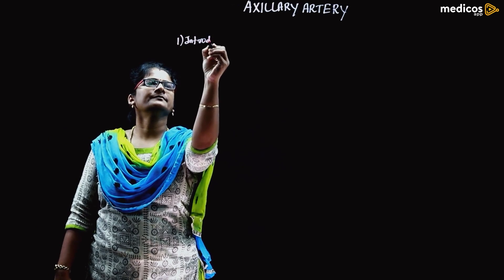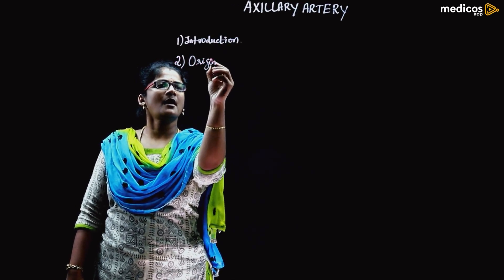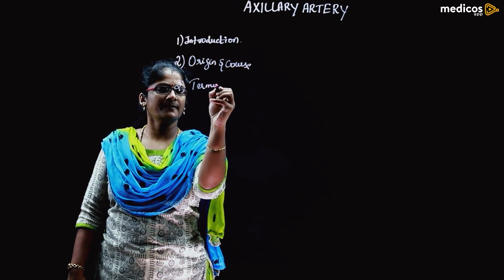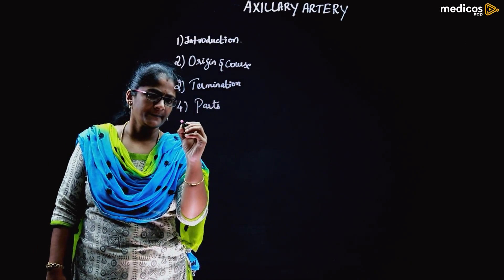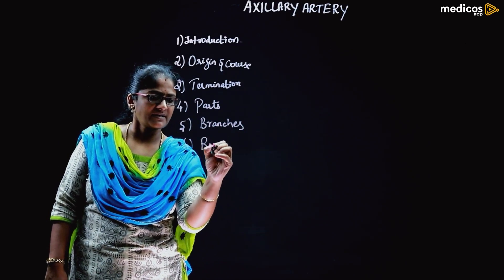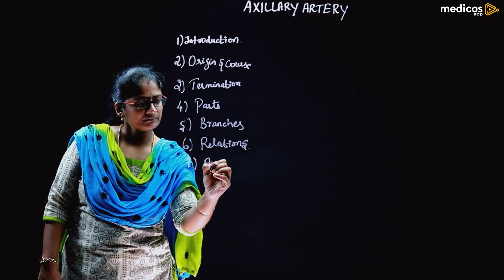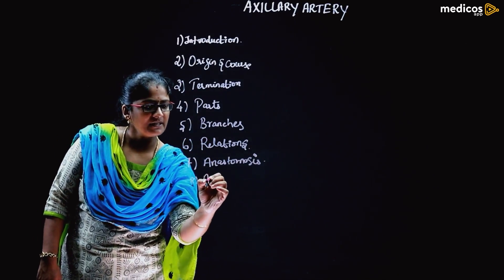We are moving on to the topic axillary artery. We are going to discuss this topic under introduction, then origin and course of the axillary artery, termination, next will be the parts of axillary artery, next will be the branches, then the relations of axillary artery, anastomosis related to axillary artery, and finally the applied aspects.